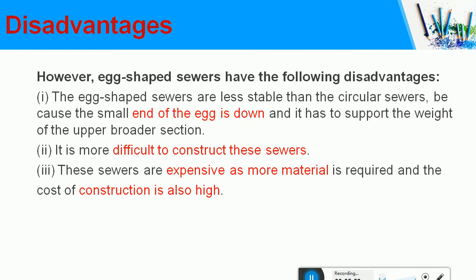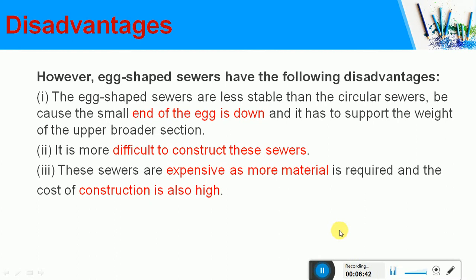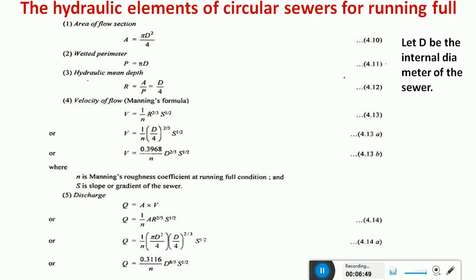Disadvantages of egg-shaped sewers: being egg-shaped, they are difficult to construct compared to circular sewers which have a uniform cross-section. Care must be taken to maintain the upper and lower diameters correctly. They are also more expensive, with high construction costs due to significant labor involvement and the engineering principles required for designing and maintaining the upper and lower sections.